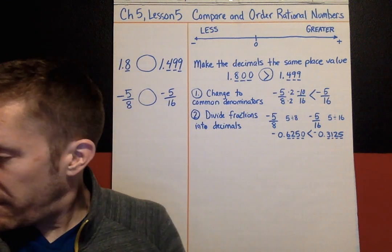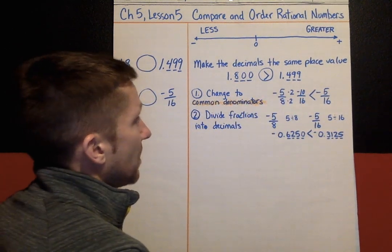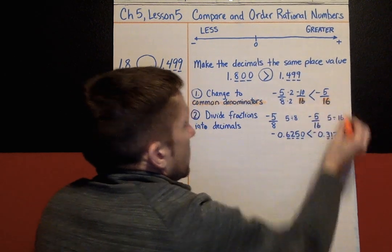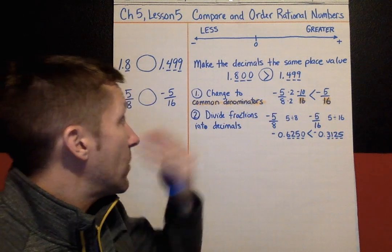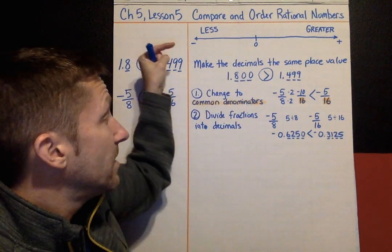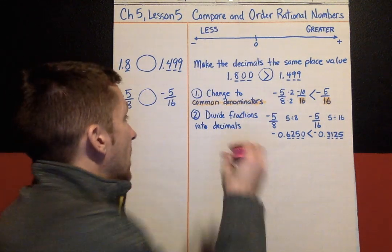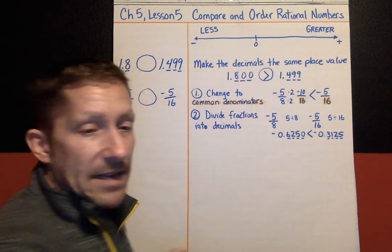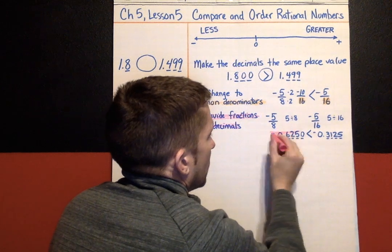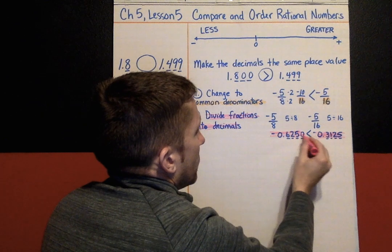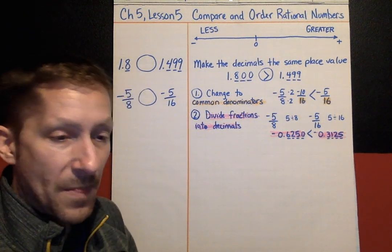Let's highlight the strategies we've covered. Common denominator means change your fractions so they have the same denominator, then go back to the number line and think about where each value is placed — whatever is further right is greater. Another strategy is dividing fractions into decimals, and we also combined that with making decimals the same place value.